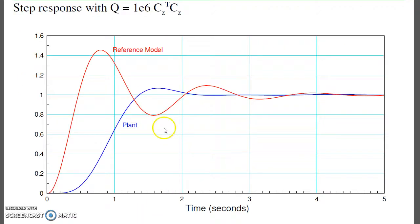If I look at the step response, that's kind of what I see. Here's how the system should behave, the red line. Here's how it does behave with the weighting of 10 to the 6th. Close, but not quite.